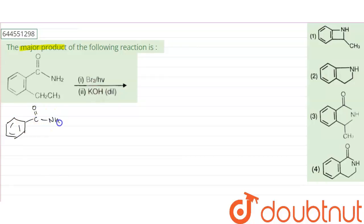This is our NH2, this is CH2-CH3, and the very first thing we added is bromine and photo energy. So what will this do is this will substitute the bromine. It will take hydrogen from here, and it will substitute the bromine over here.